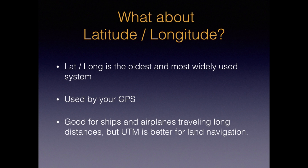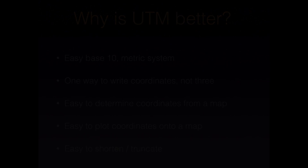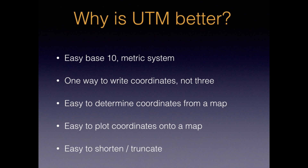Before we dive into UTM, let's have a brief look at another coordinate system: latitude and longitude. This system is the oldest and most widely used — most everyone has at least heard of it, and it's used by your GPS. Latitude and longitude works great for ships and airplanes, but UTM is preferred for land navigation. Here are a few reasons why: easy base 10 metric system; one way to write coordinates, not three different ones like with latitude and longitude; it's easy to determine coordinates from a map, plot coordinates onto a map, and if you need to, shorten or truncate the coordinates, which we'll see in a little bit.